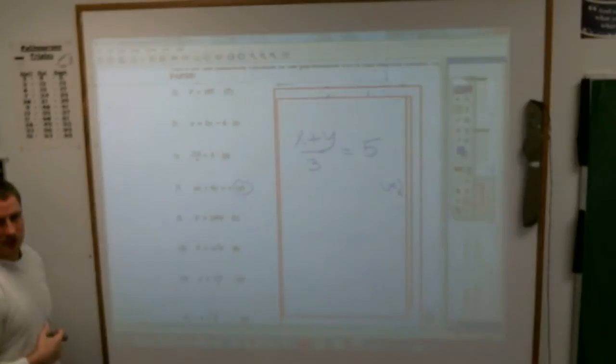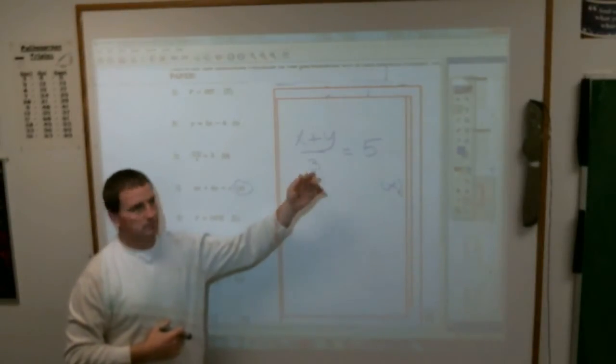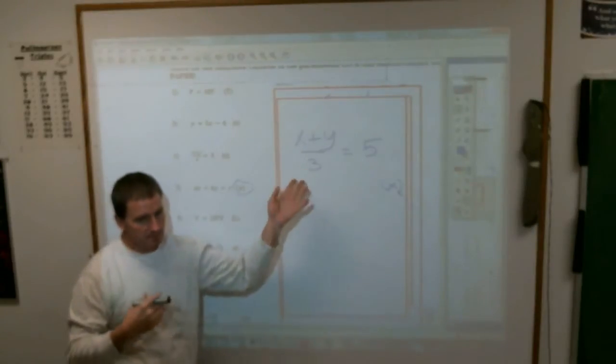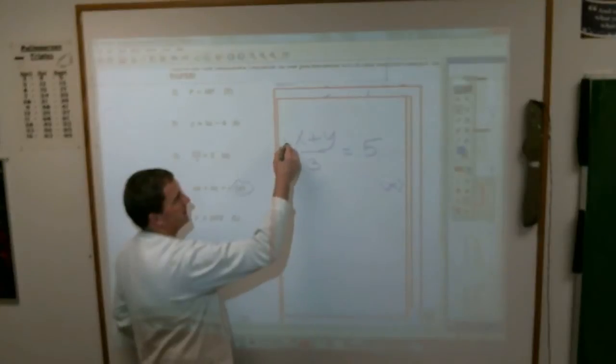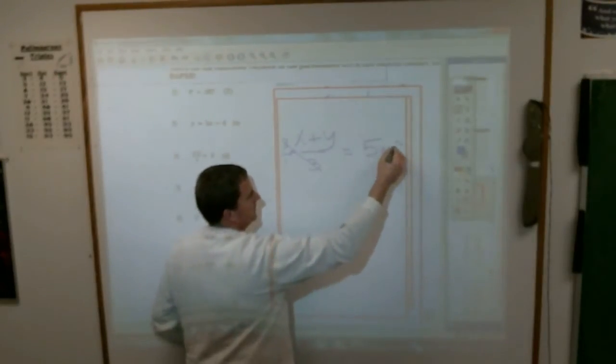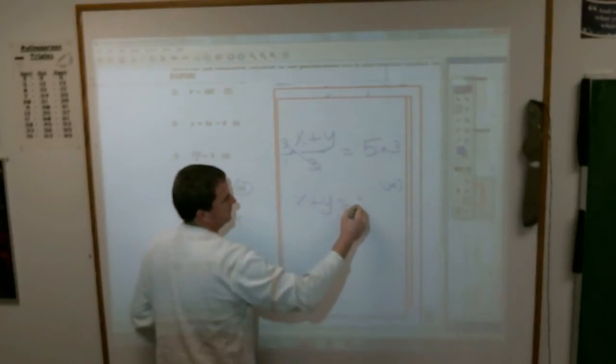Number five says to take X plus Y over three equals five and solve that for X. The first thing you've probably got to do is make sure this is not a fraction anymore. This is X plus Y divided by three, so the opposite of dividing by three is multiply by three. If I multiply this side by three over one, three's cross off. If I multiply this by three, then I get 15. So now X plus Y equals 15.